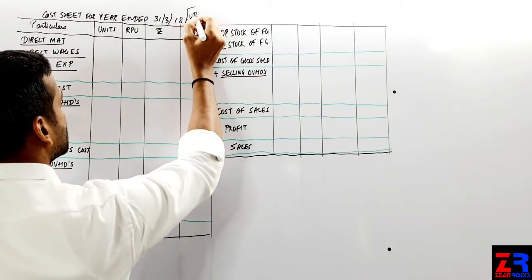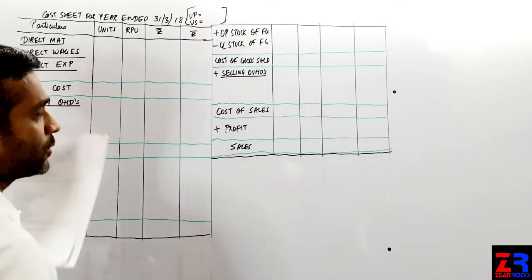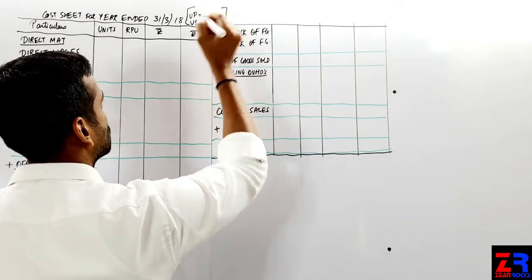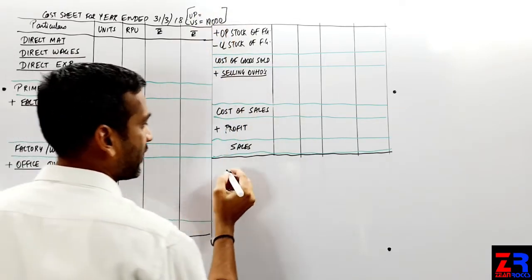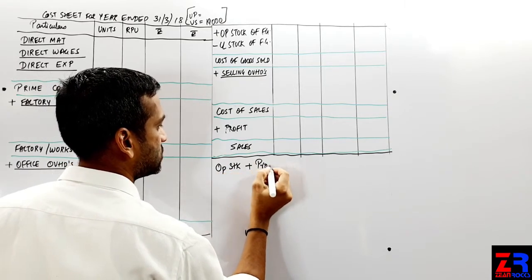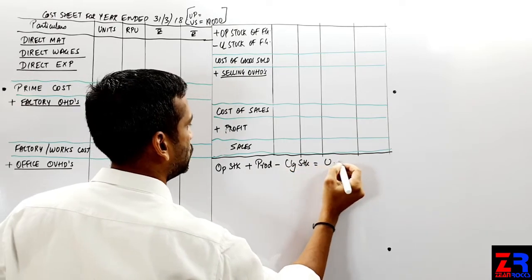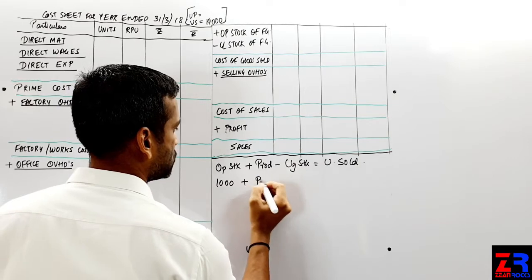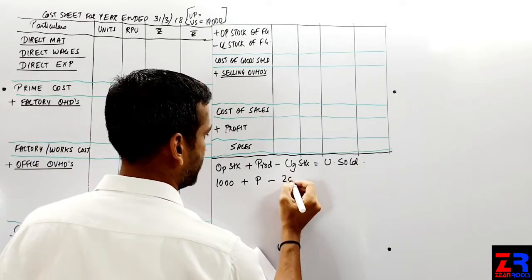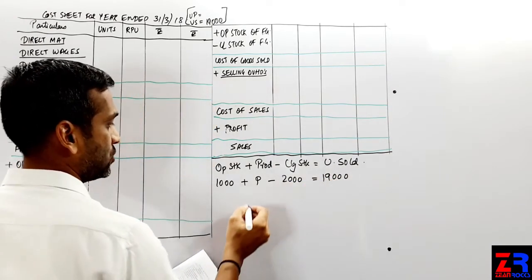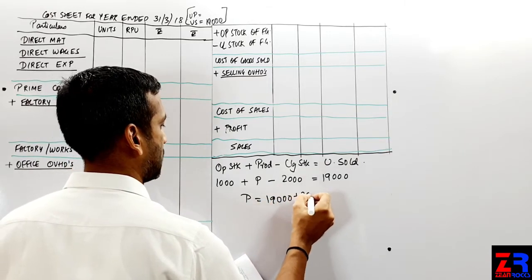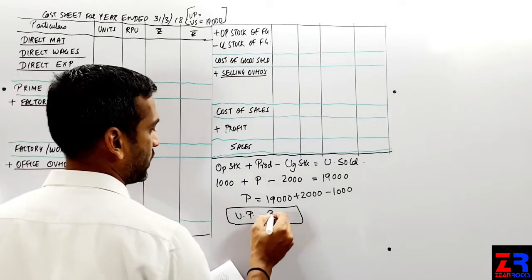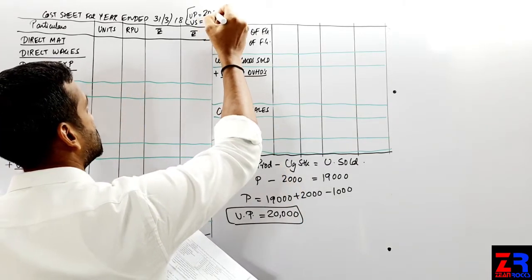After writing this we have to write unit produced and units sold. This is very important. In the question, units sold are given as 19,000 units, but unit produced is not given. So I'll write the formula: opening stock plus produce less closing stock equals units sold. Opening stock of finished goods is 1,000 units, closing stock is 2,000 units, equals 19,000 units sold. So produce will be 19,000 plus 2,000 minus 1,000, that is 20,000 units produced.